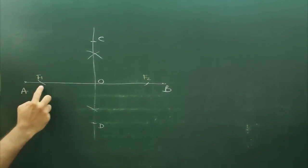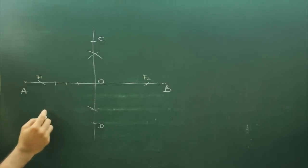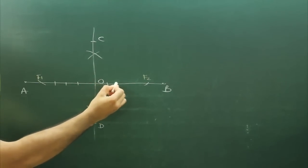After that we divide F1 to O into equal parts. Let's say 4 parts. So I will divide it into 1, 2, 3, 4 parts. Same on the other side, F2 to O into 4 parts.